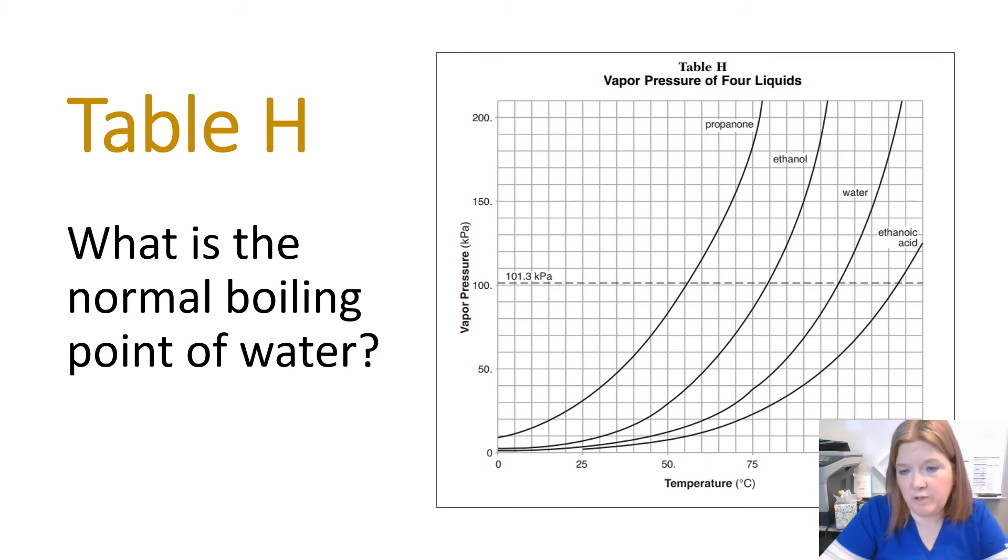So what is the normal boiling point of water? Again, you look where water crosses that line, go down and read the temperature. In this case, it's 100 degrees Celsius.